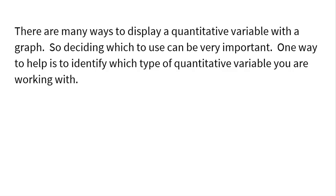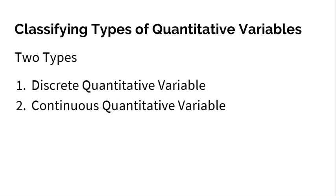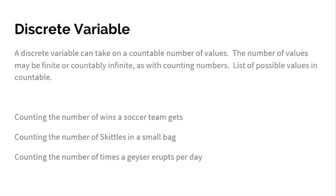One way to help is to identify which type of quantitative variable you are working with. There are two different types of quantitative variables. If you go back to the video on quantitative variables, I discussed that there are two different ways of looking at them: measuring and counting. So that means there are two different types: discrete quantitative variables and continuous quantitative variables.